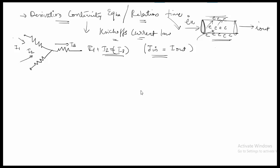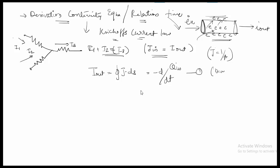To derive the continuity equation and the relaxation time, we consider that i_out is equal to the surface integral of J dot dS — that is, current density times area, since J equals i over A. This equals minus d/dt of the charge entering. Applying the divergence theorem to this first equation gives us the next step.